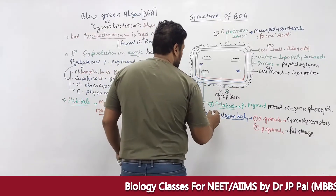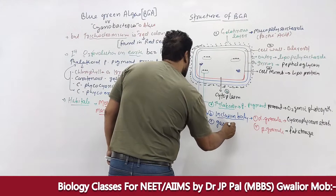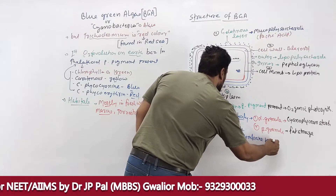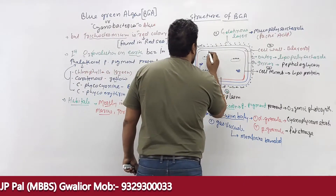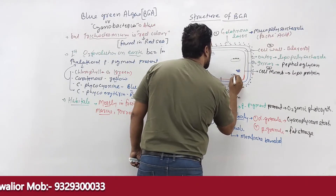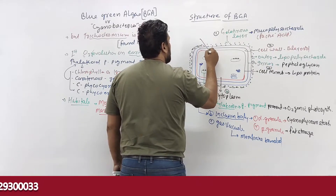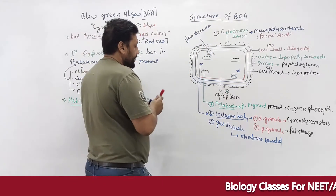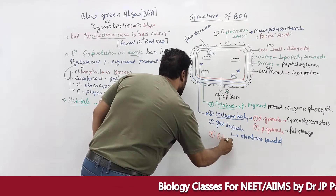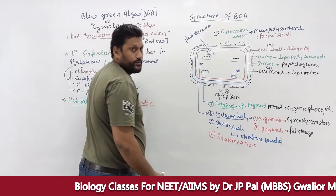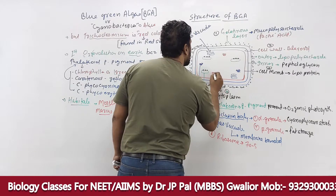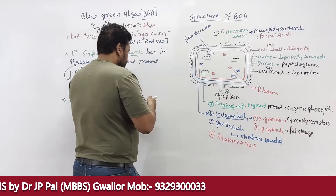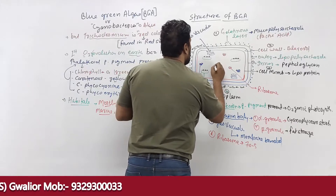Gas vacuoles are membrane-bounded structures present in the cytoplasm of BGA. Next, ribosomes are also present — prokaryotic 70S ribosomes, which are the protein synthetic units. The nucleus region is represented by the nucleoid (chromosome without nuclear membrane), called the nucleoid.